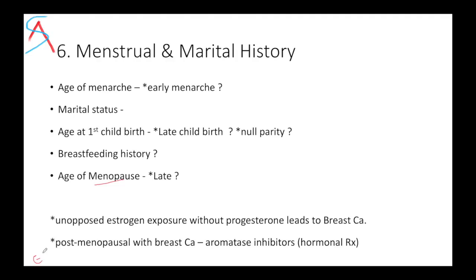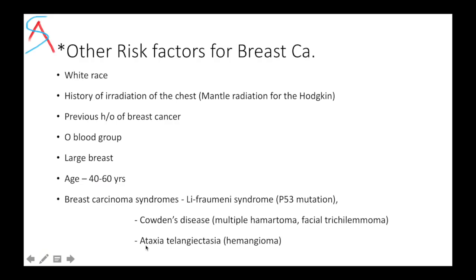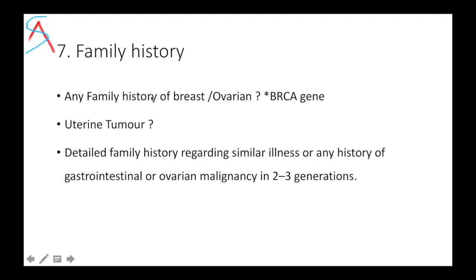If breast cancer is ER-positive (estrogen receptor positive) and the lady is post-menopausal, aromatase inhibitors are given. You must know the names of breast carcinoma syndromes. In family history, history of breast and ovarian carcinoma is important because of the BRCA gene. If there is increased estrogen in the body, it can result in uterine tumor. A detailed family history regarding gastrointestinal, ovarian, or breast malignancy in two or three generations is needed.